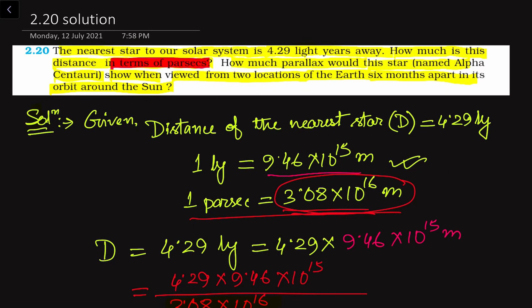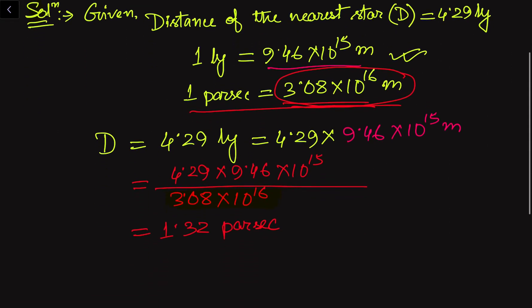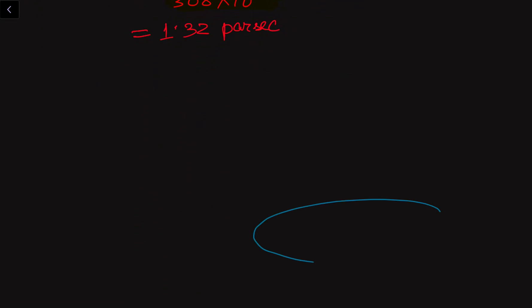Now we have to find out the parallax that the star named Alpha Centauri would show when viewed from two locations of the Earth six months apart in its orbit around the Sun. Suppose we have the orbit of the Earth around the Sun — from one point to the diametrically opposite point represents six months apart. In 12 months the Earth revolves around the Sun, so in six months it covers half the orbit. This diameter equals 3 × 10¹¹ meters, as found in the previous question. We also have the star positioned here.